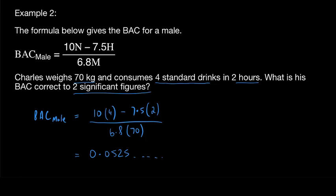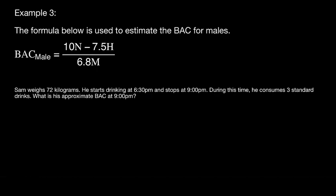We need to round to two significant figures. Starting from the left and moving right, we currently have three significant figures, so we look at the third digit. Because it's a 5 — five or above means we round up — so correct to two significant figures, the answer is 0.053.